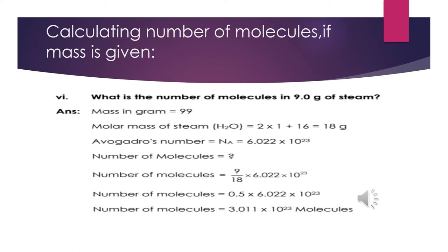Now we are going to calculate the number of molecules if mass is given. The example is: what is the number of molecules in 9 grams of steam? The chemical formula of steam is water, so we are finding the number of molecules in 9 grams of water. Using the formula: number of molecules = (mass × Avogadro's number) / molar mass — mass of water is 9 grams, molar mass of water is 18 g/mol — the number of molecules found is 3.011 × 10²³.